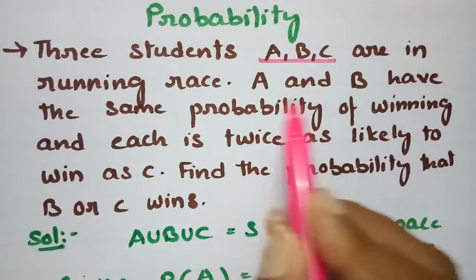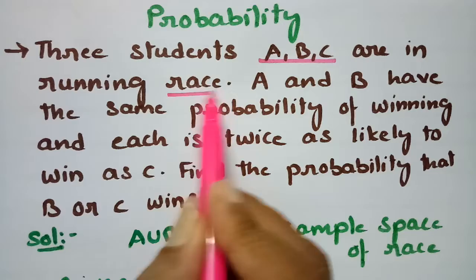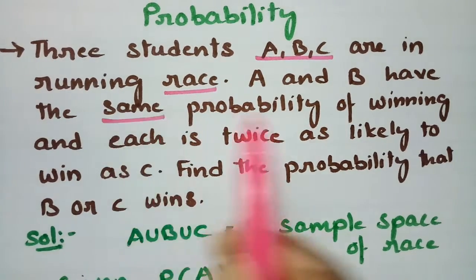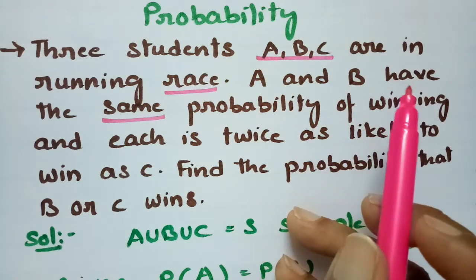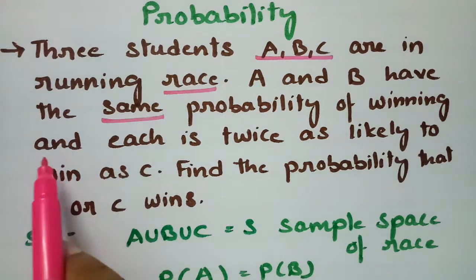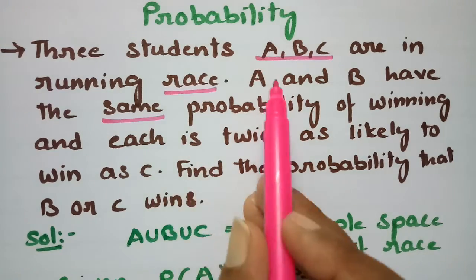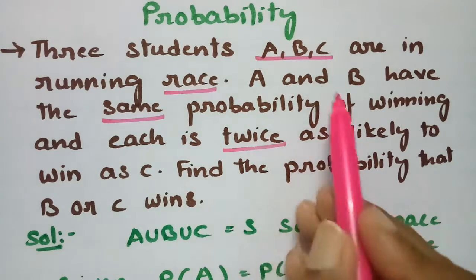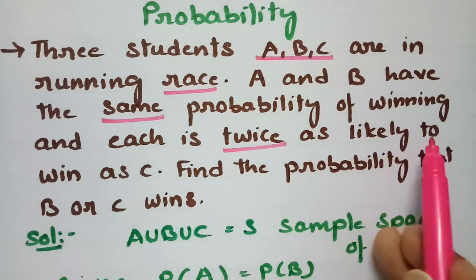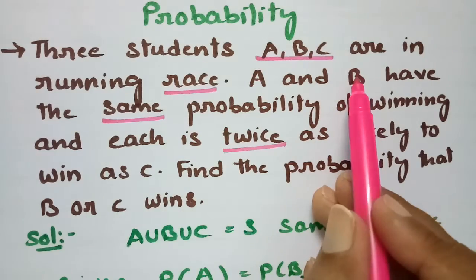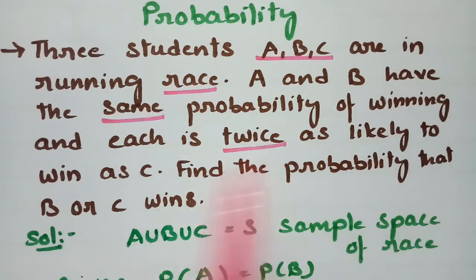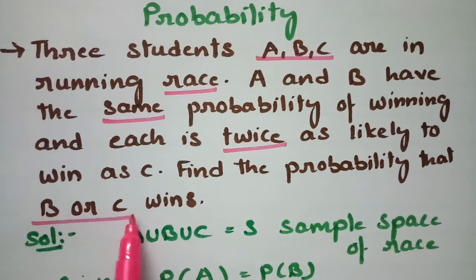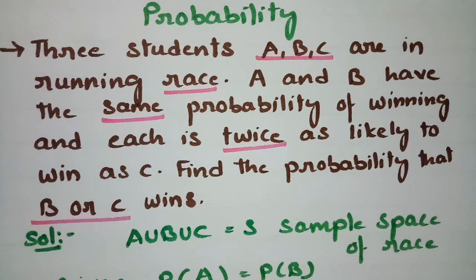How many students are there? Three students A, B, C are in a running race. A and B have equal chances of winning, and each — meaning A and B — is twice as likely to win as C. So A is twice as likely to win as C, and B is also twice as likely to win as C. The question asks for the probability that B or C wins.